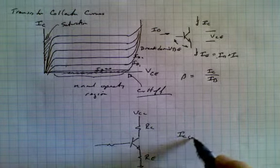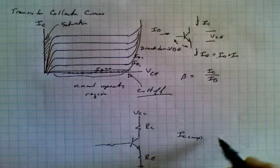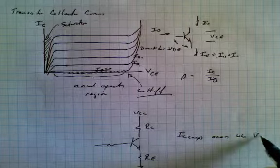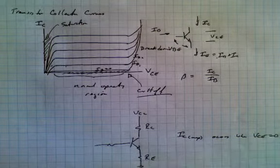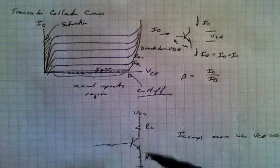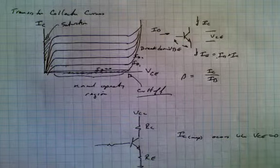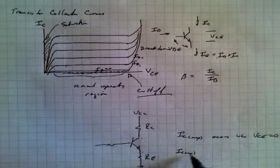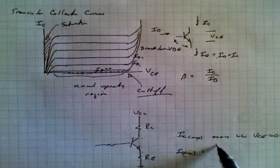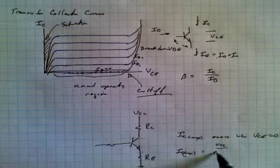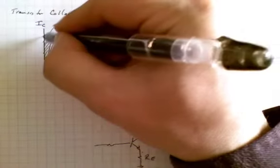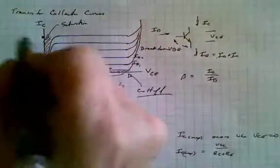IC maximum occurs when VCE is equal to zero. When this voltage here drops to zero, the current cannot possibly get any larger. So IC max is equal to VCC divided by RC plus RE. And that's going to be up here someplace, some number, IC max.